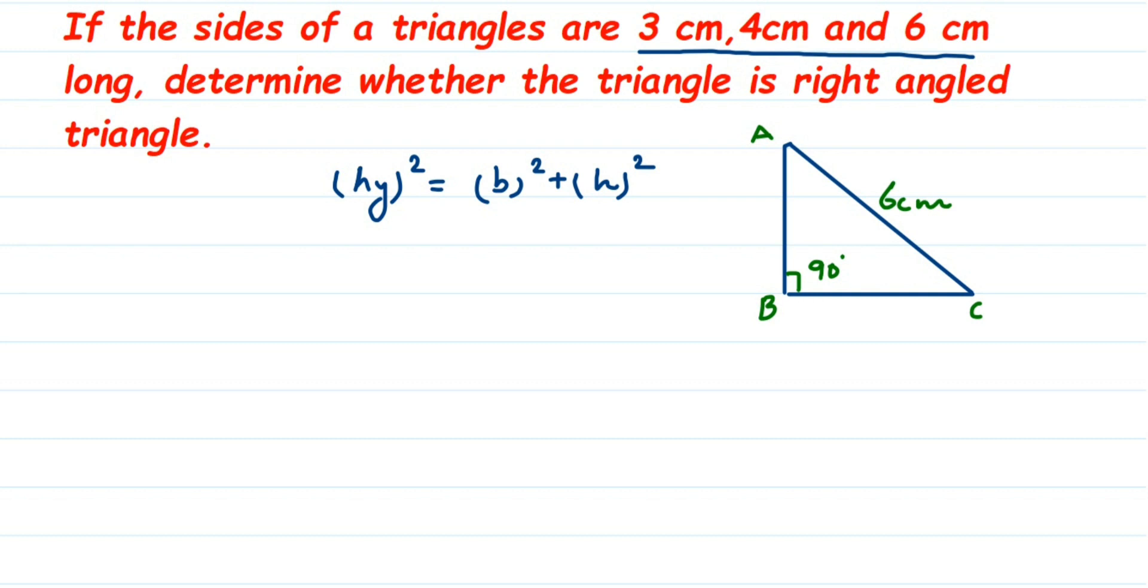And the other two sides, we have 3 and 4. You can just assume any one to be 3 and one to be 4 here, it will not change the answer. One is 3 and one is 4.